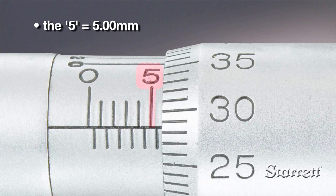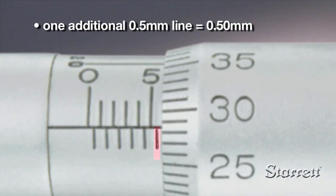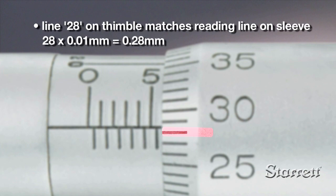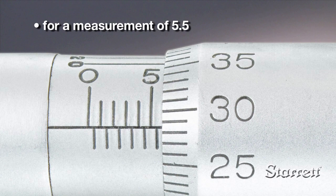In this example, the last sleeve line visible is the bottom line after the 5 for a value of 5.5. The thimble scale value at the sleeve line is 28, so the measurement is 5.5 plus 0.28 or 5.78 mm.